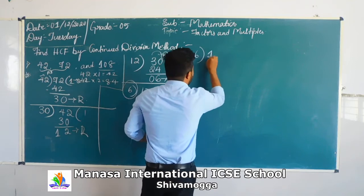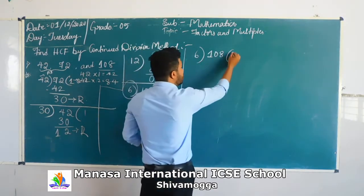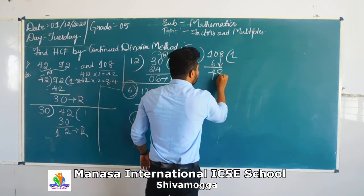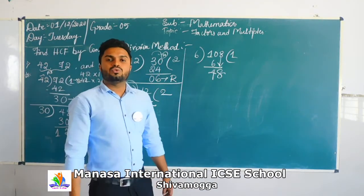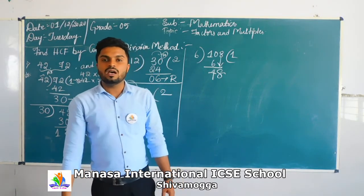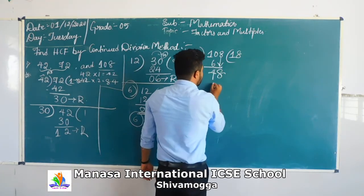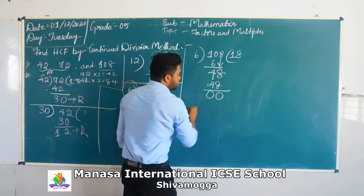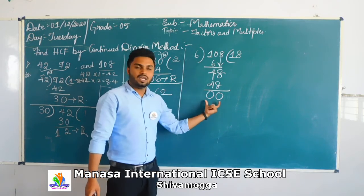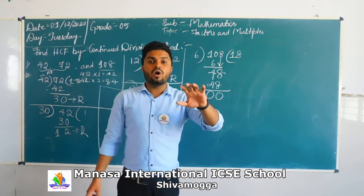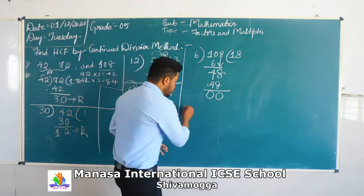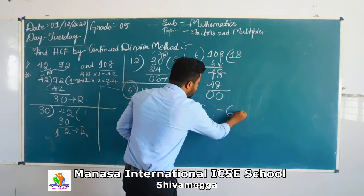Dividing 108 by 6: 6 ones are 6. 10 minus 6 is 4. Bring down 8, giving 48. 6 eights are 48. 48 minus 48 is 0. The remainder is 0. So 6 completely divides 108. Therefore the HCF of the three terms 42, 72, and 108 is 6.